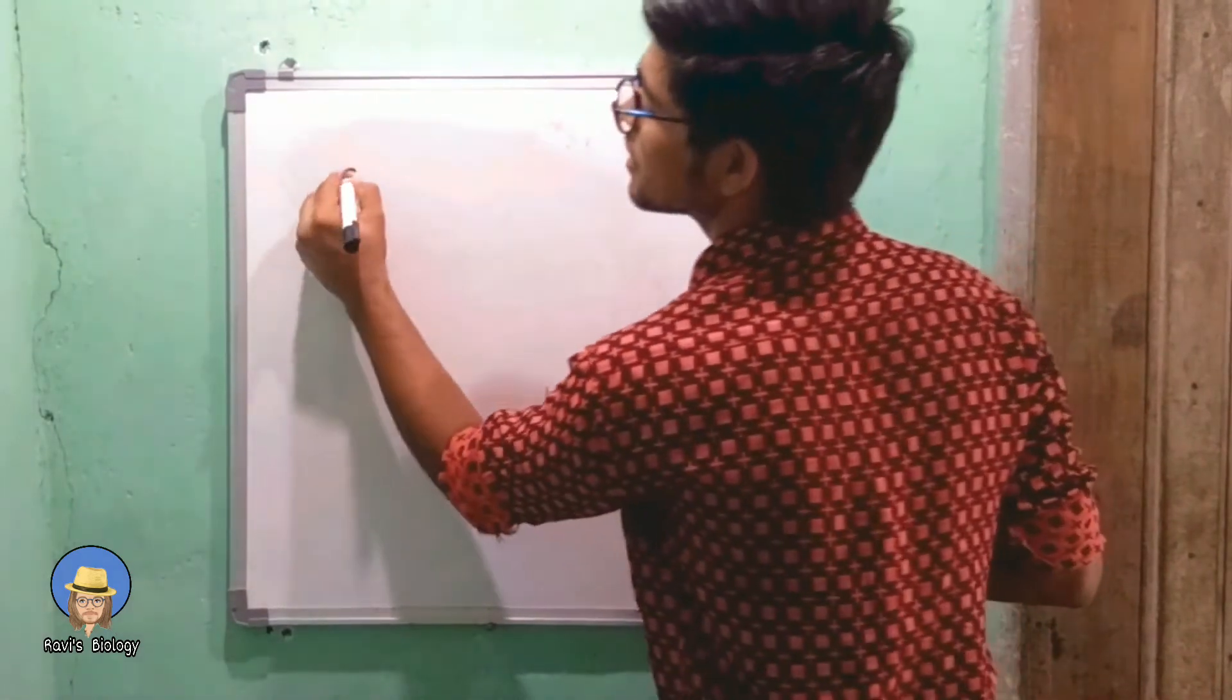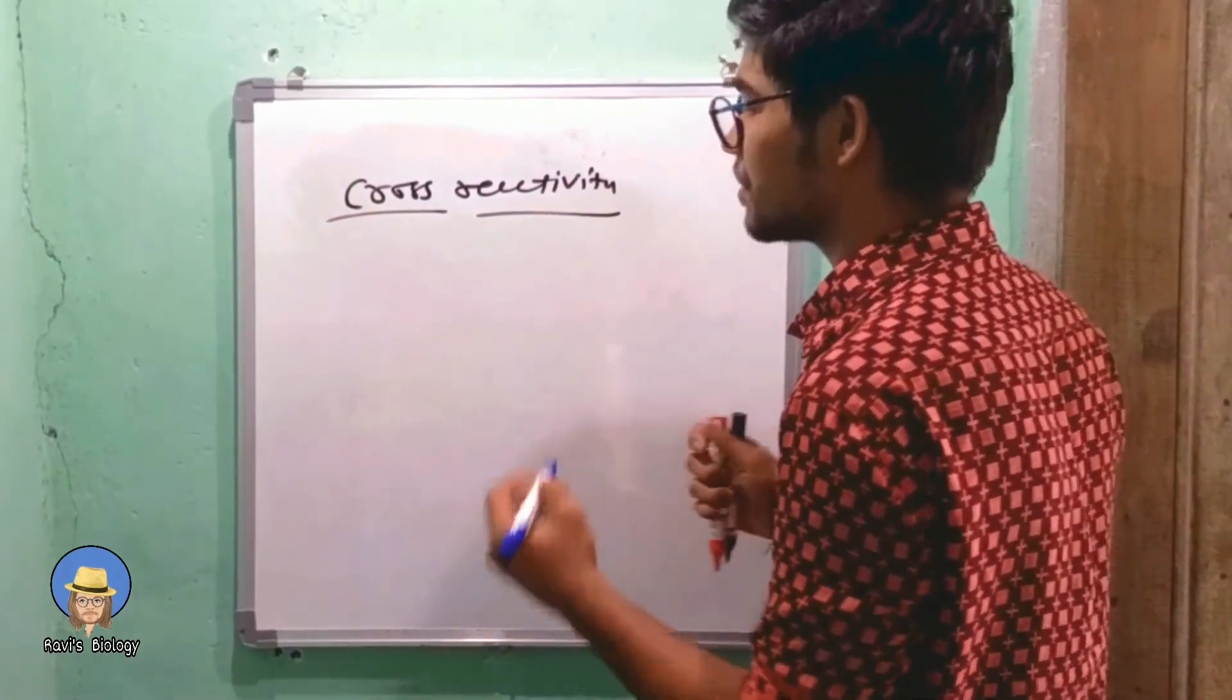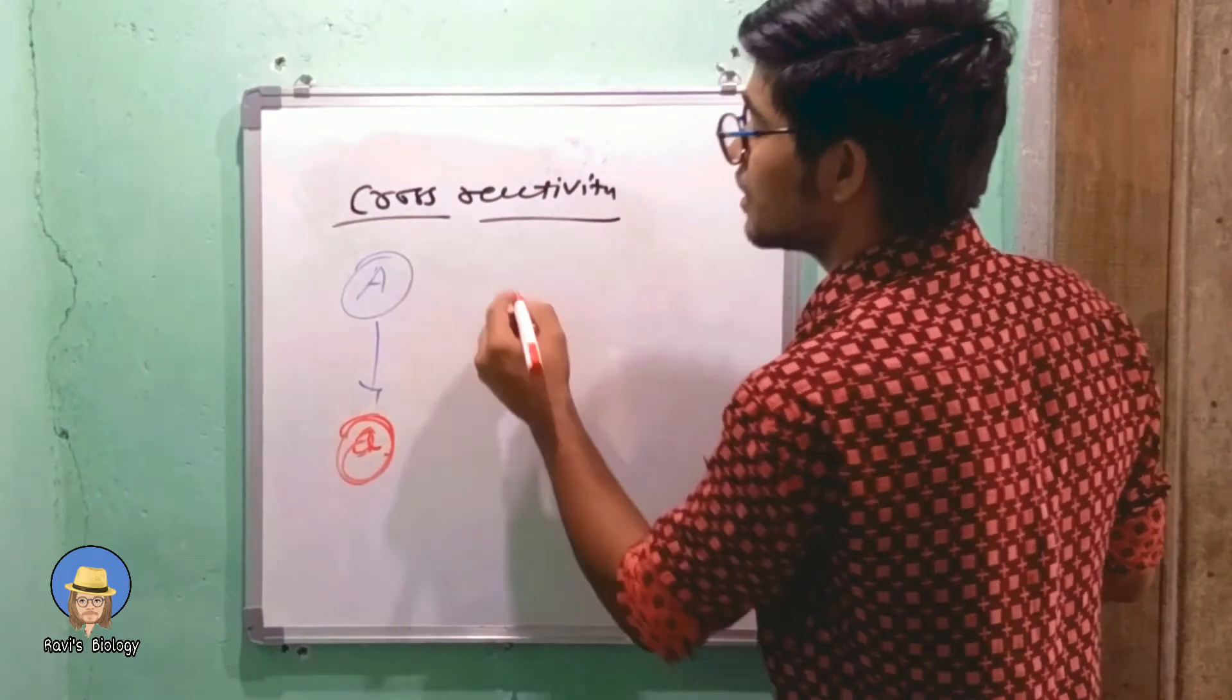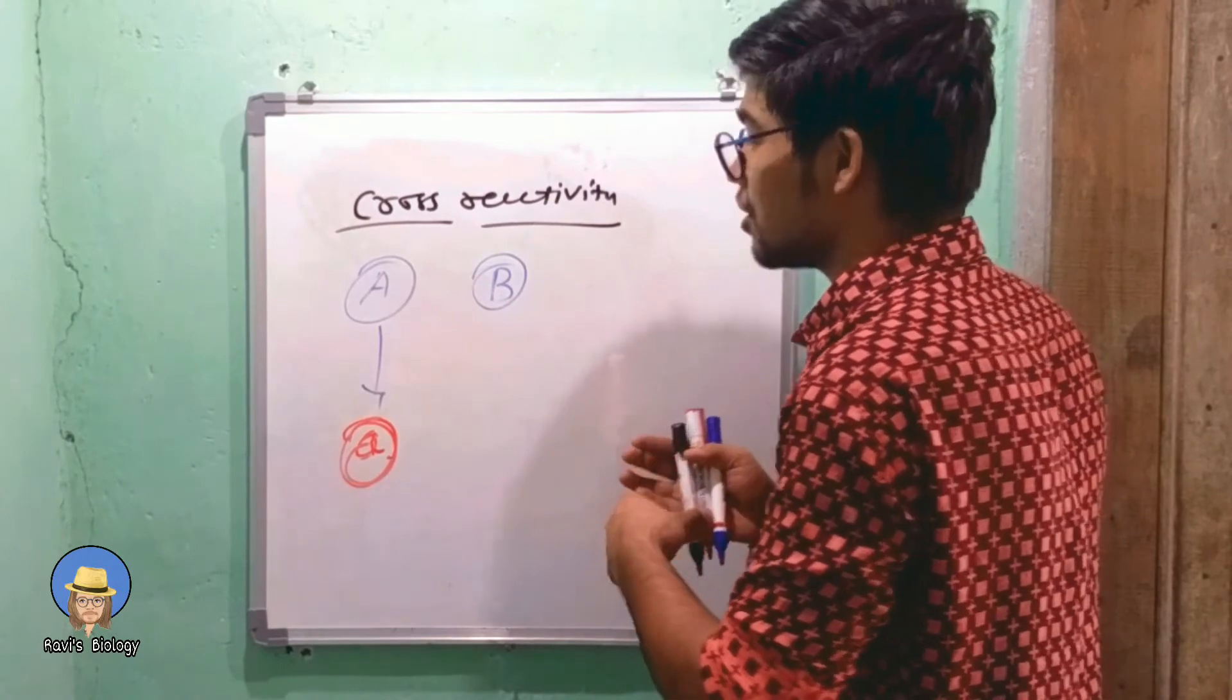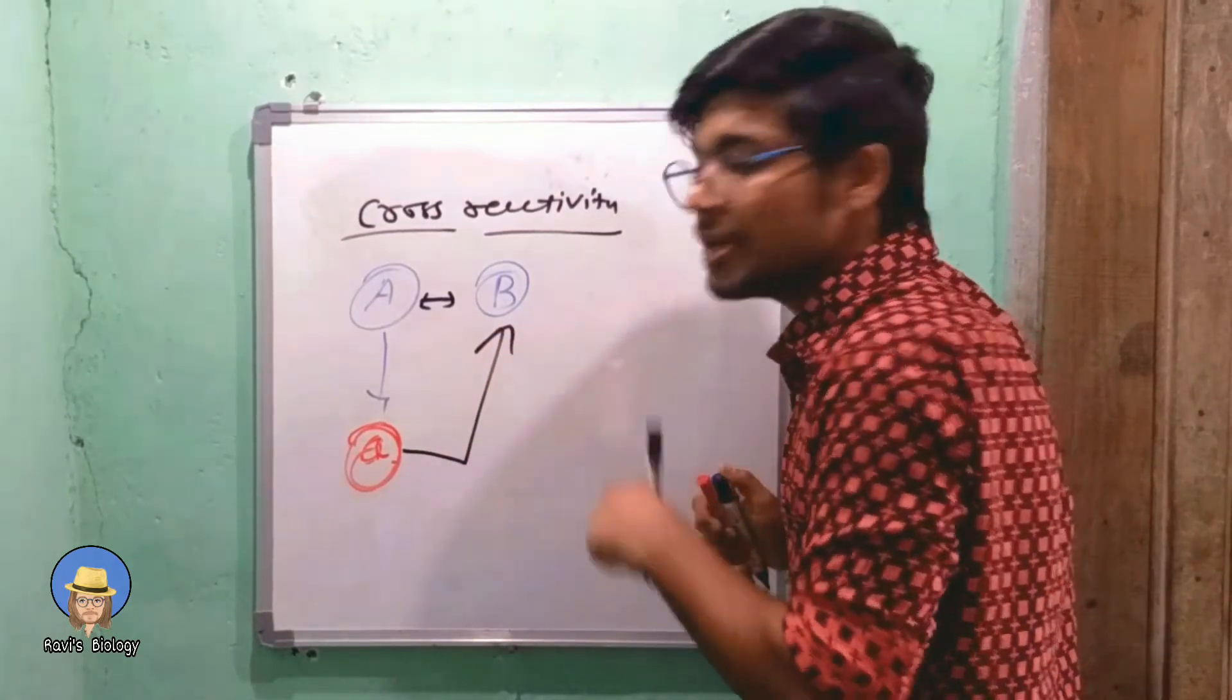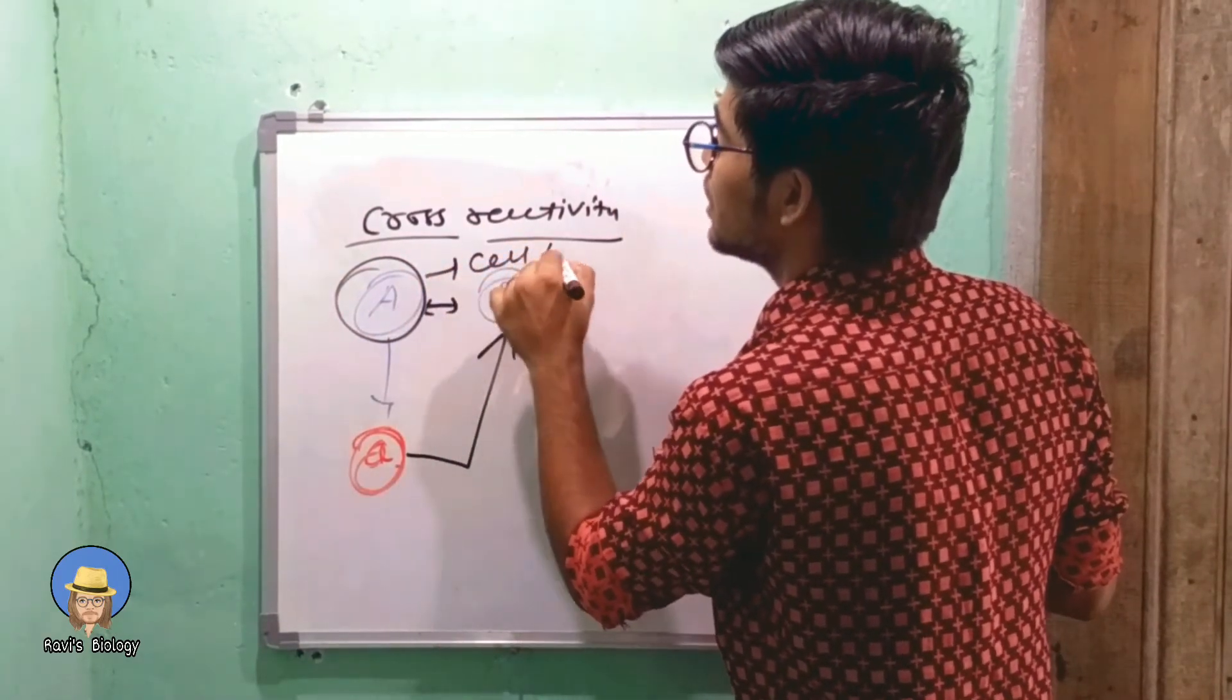The last feature is cross reactivity. It is a very crucial feature. For example, antigen A comes inside the cell, antibody B is produced. Inside the cell, antigen B which is self antigen is already present, but A and B both have same epitopes. So by mistake antibody A will bind with antigen B, so antigen A which came is fully free and it will damage cell or any body part.